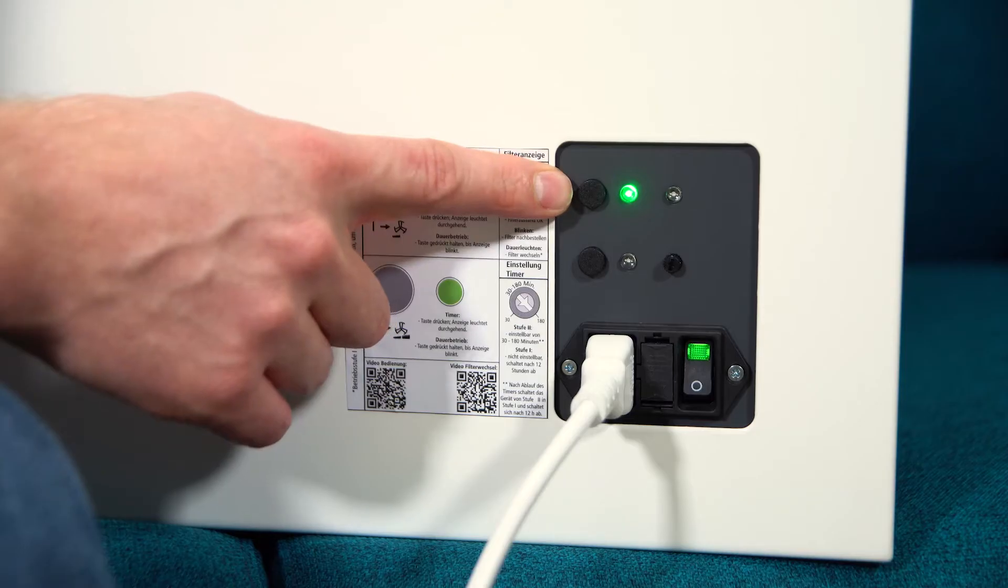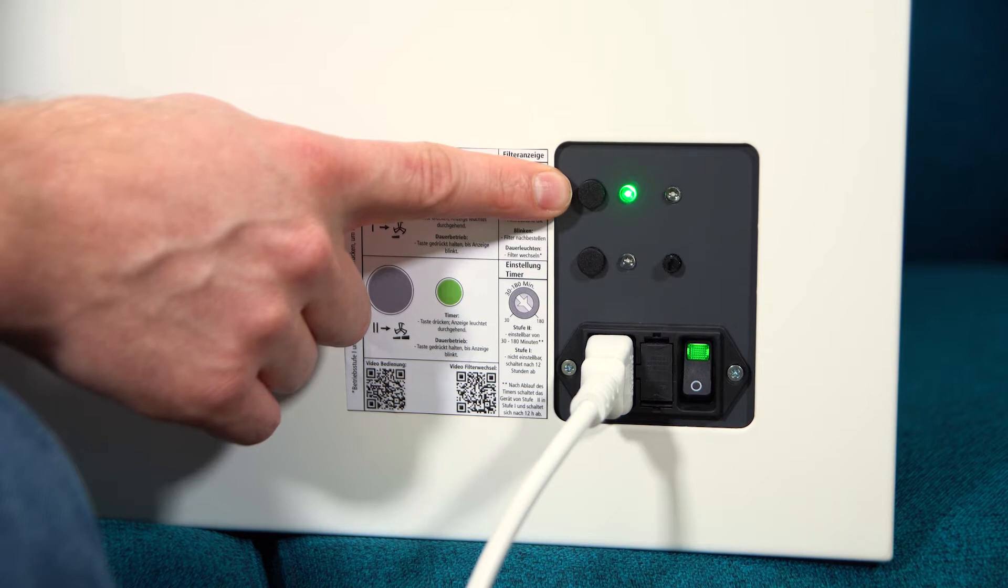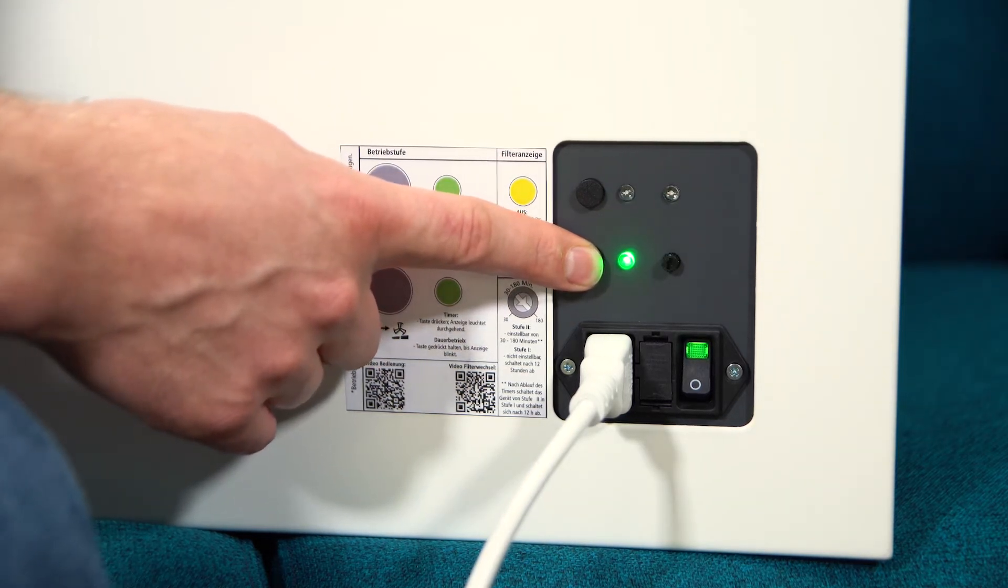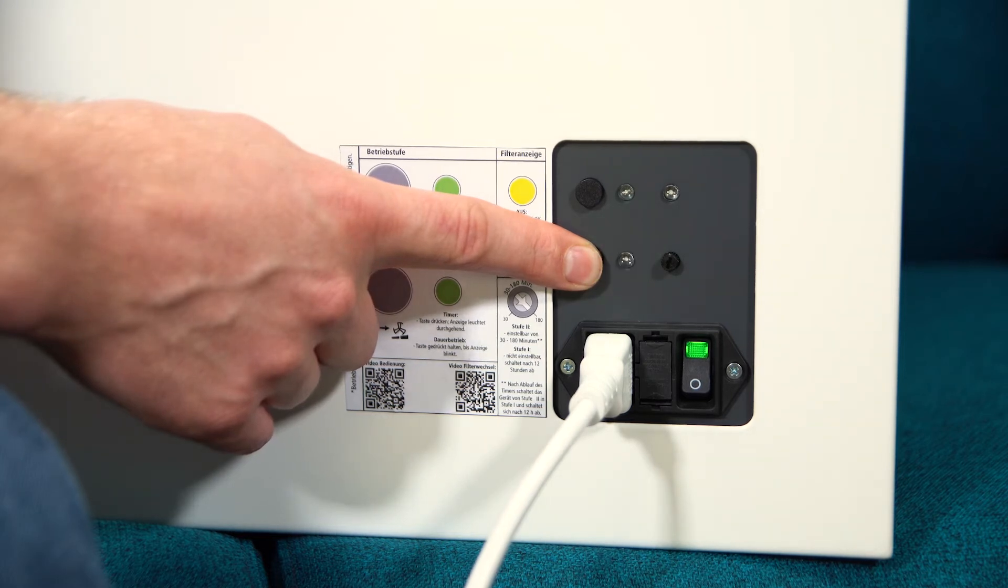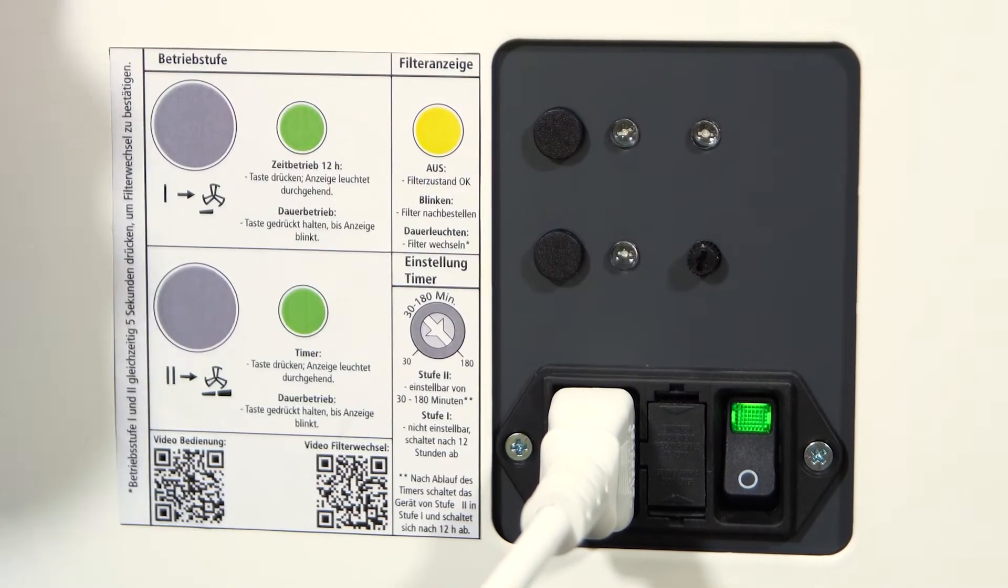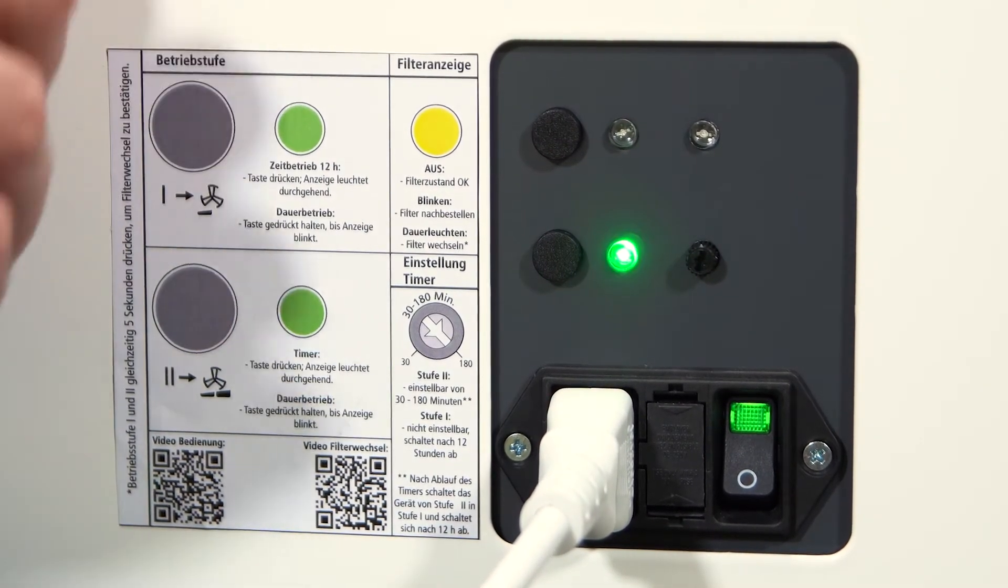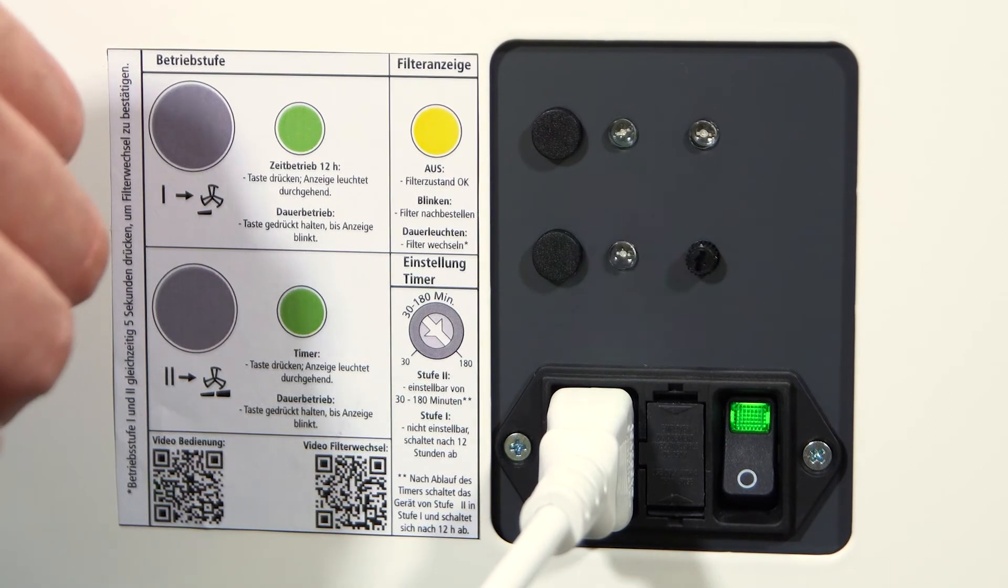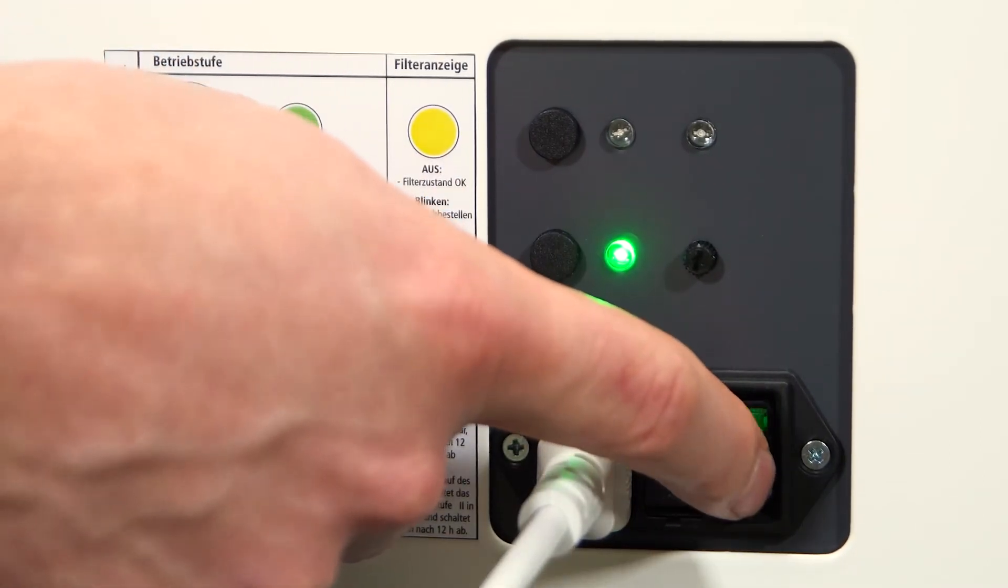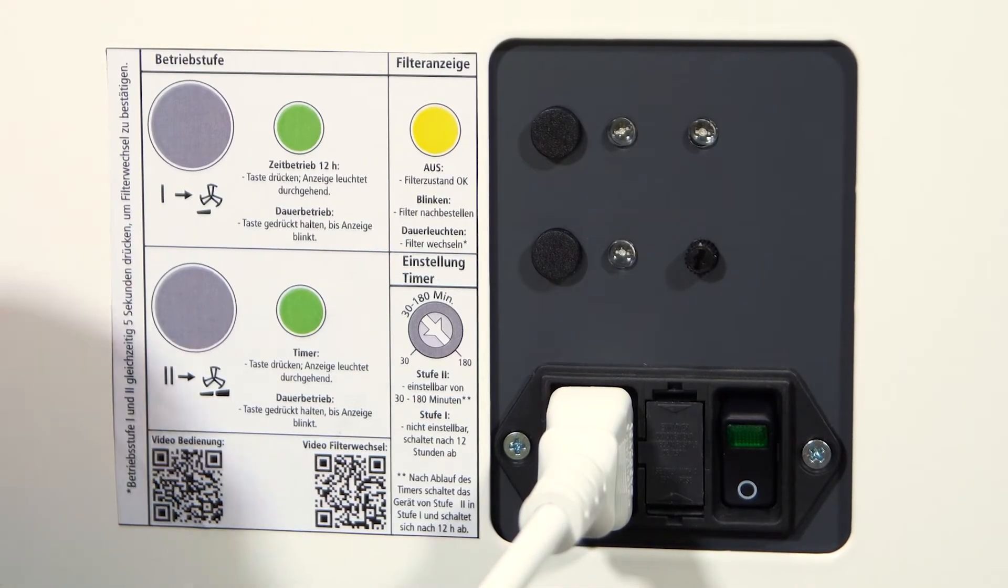Would you like a continuous operating level without timer? Press the button for the desired operating level and hold it down until the green LED starts flashing. In LED flashing level, the operating level stays the same as long as the air purifier is switched on, or until the button is pressed again, or until the device is switched off completely.